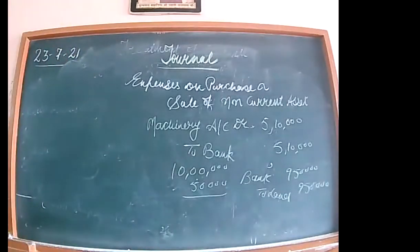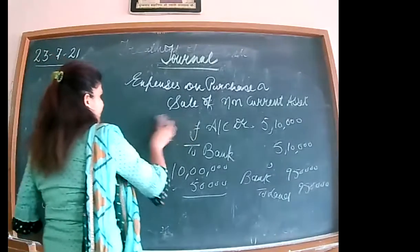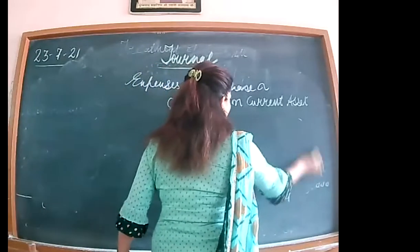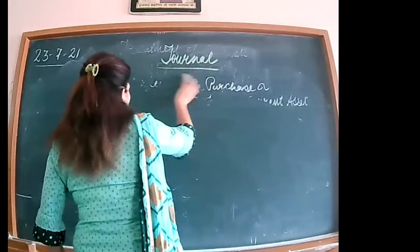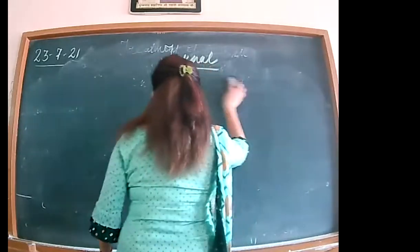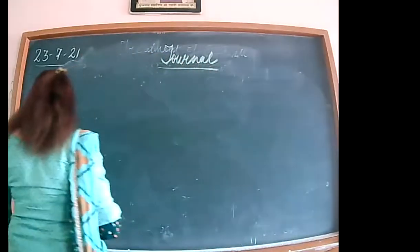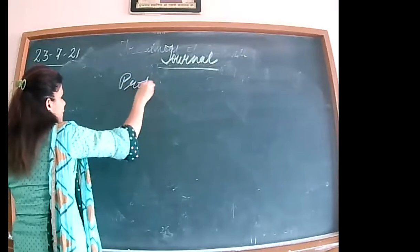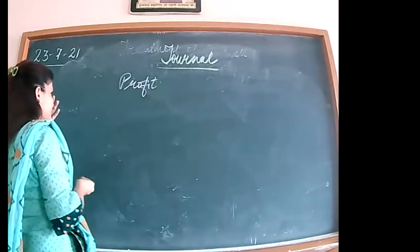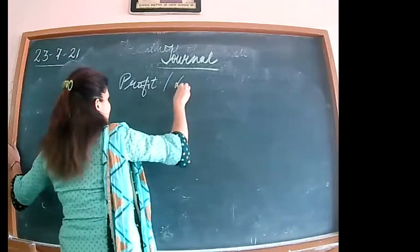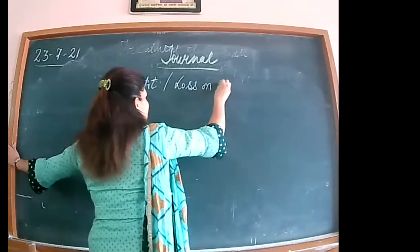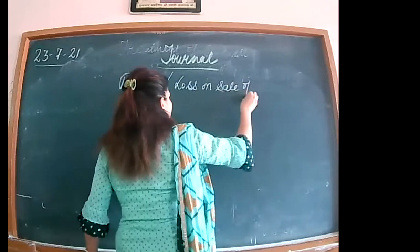A simple entry comes — cash account debit to sales. For example, goods of Rs. 3,000 sold. This paragraph heading: profit or loss on the sale of goods. It is never to be shown in the journal entry — simply pass the selling price entry.